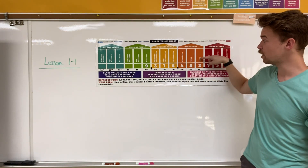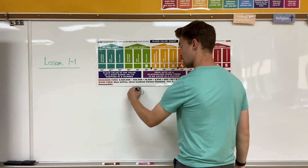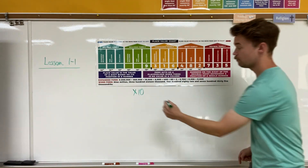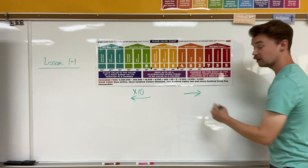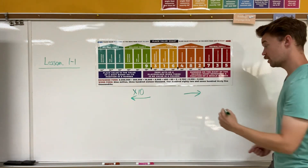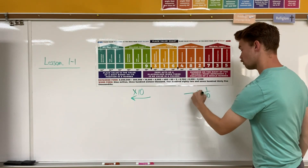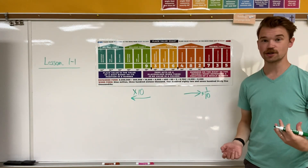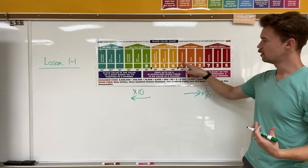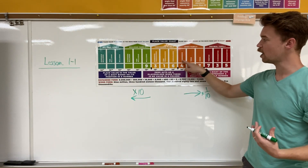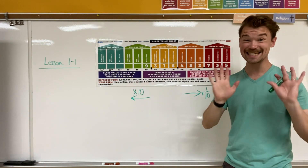Your book asks you to write it in word form or number name — that might take a little bit of time, but we can do it. One more thing to note: every single time that you go one place value to the left, you get 10 times bigger. If we go to the right, we'll eventually learn that's 10 times smaller, or times one-tenth.